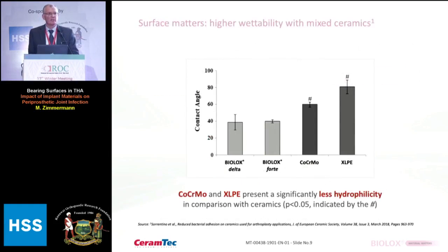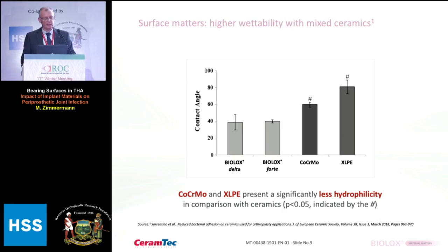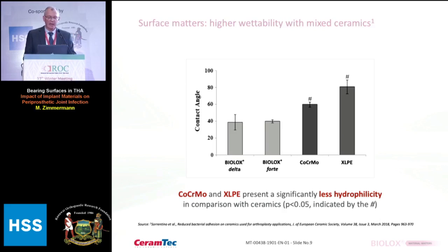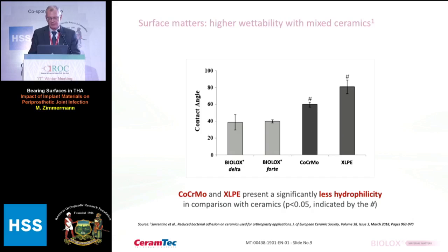Looking at some studies, we know that the wettability of ceramic is better compared to cobalt chrome or highly cross-linked polyethylene. As you can see in this figure, for both Biolox delta and Biolox forte, there is better wettability shown here by a lower contact angle of the surface.